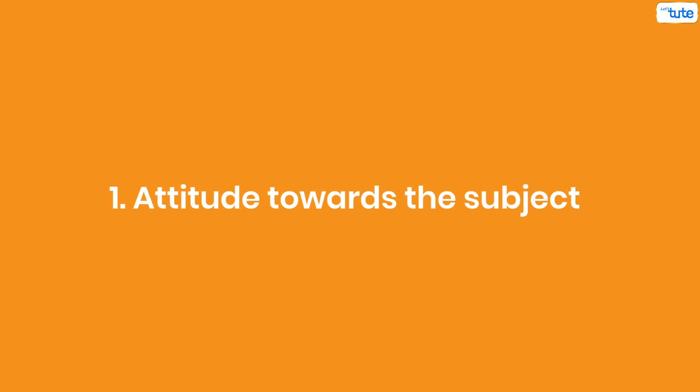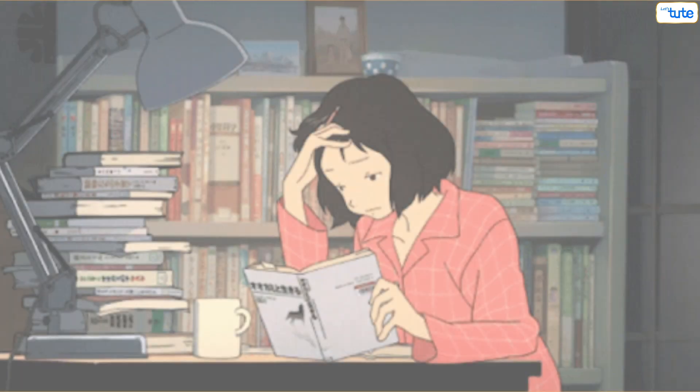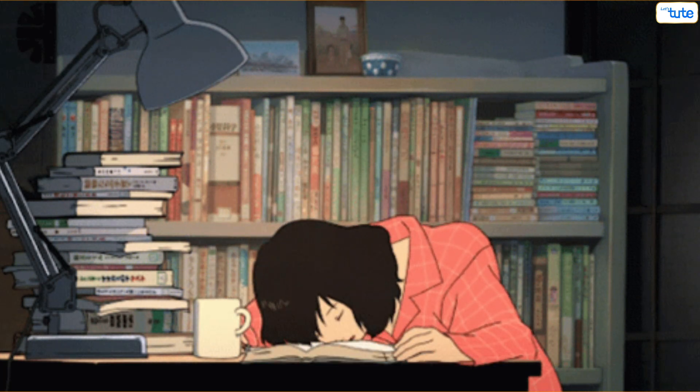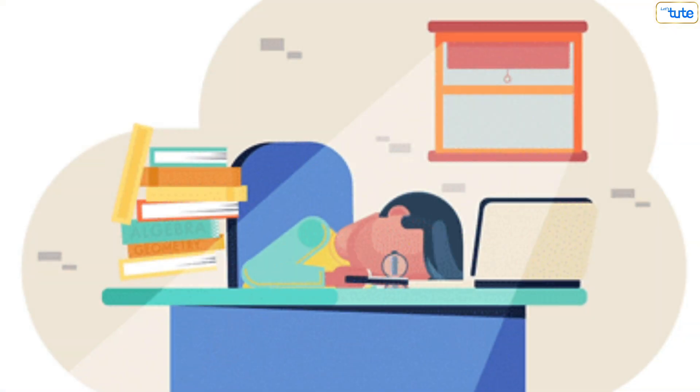Tip number one: Attitude towards the subject. Attitude plays a crucial role, meaning if a student thinks that he or she will not do well in the given subject, then he will definitely develop a phobia for it because of which the student will lose interest in that subject.